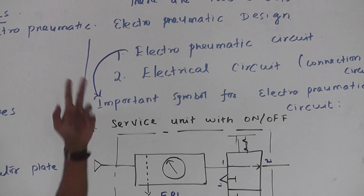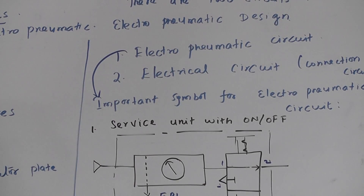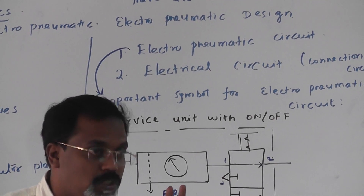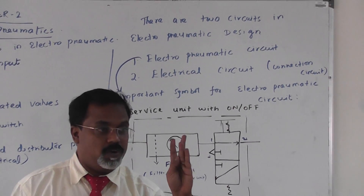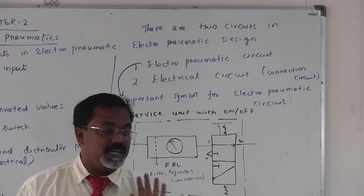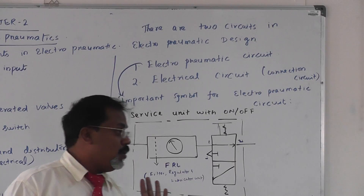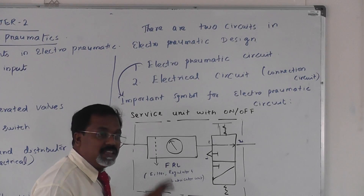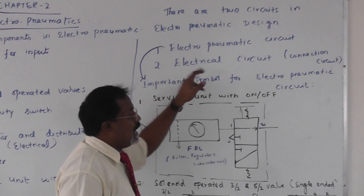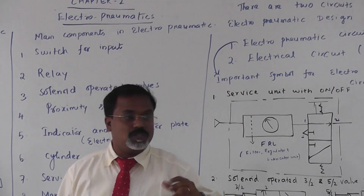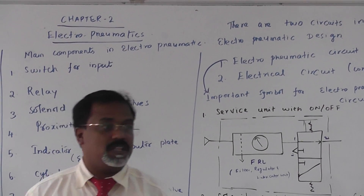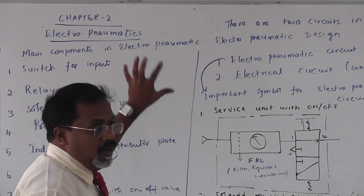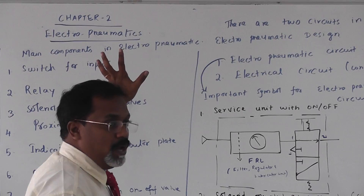In an electro-pneumatic circuit, there are two circuits you must draw. If this type of question comes in your examination, you have to draw: one is the electro-pneumatic circuit, and the other is the electrical connection circuit, generally called the electrical circuit. You must draw both circuits to complete the circuit design for a given application.